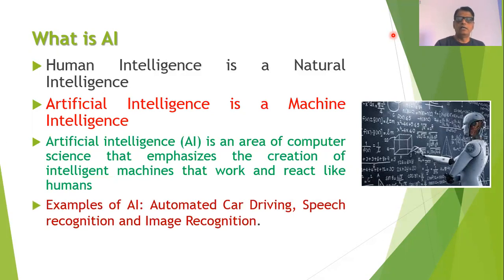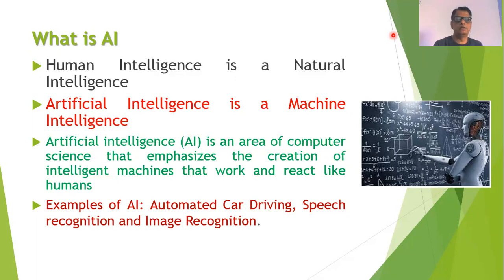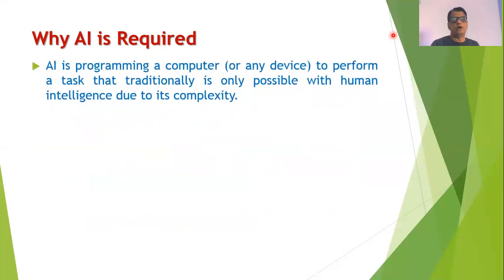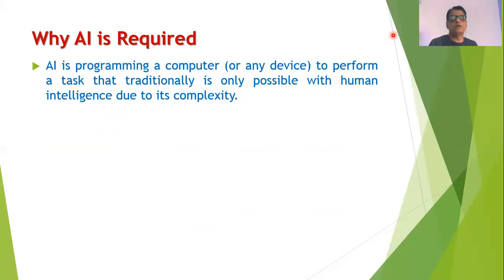Several examples can be given of artificial intelligence. For example, whenever we see an automated car driving — that is a car without a driver — or when speech is automatically recognized, or an image or face is recognized automatically, then the programs must be making use of artificial intelligence.